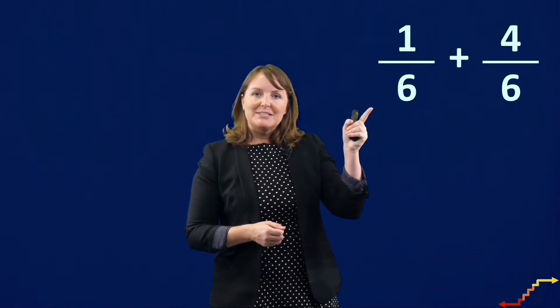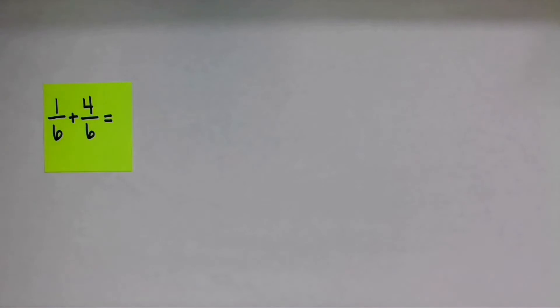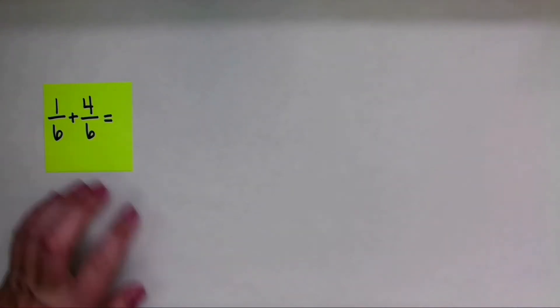So let's see what this looks like. We are going to add the fractions one-sixth and four-sixths. So let me show you what this looks like with the fraction tiles. So we have one-sixth and four-sixths. That's kind of hard to say, isn't it?